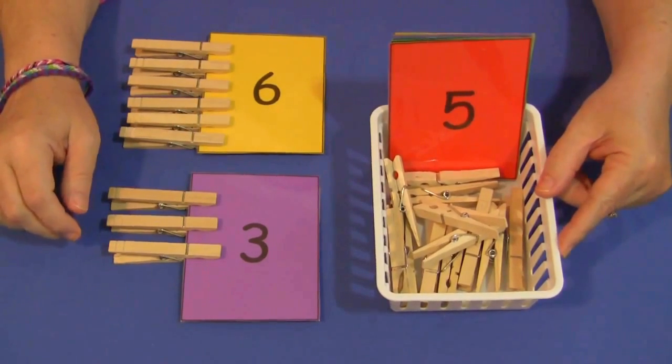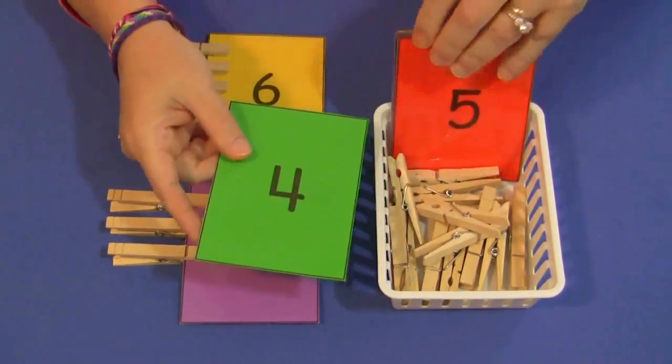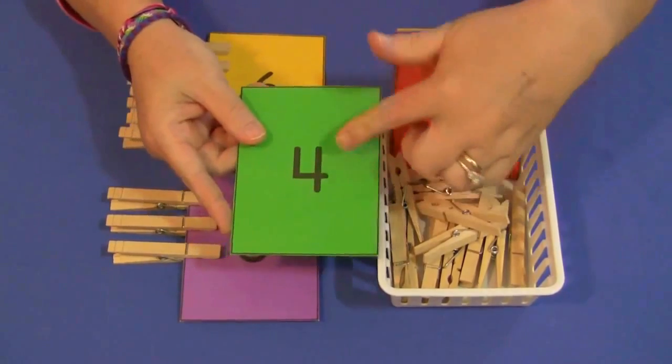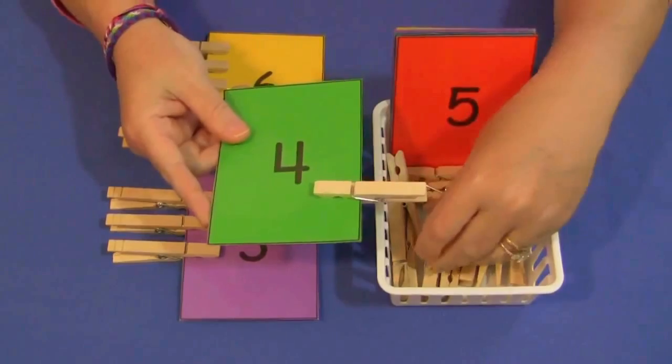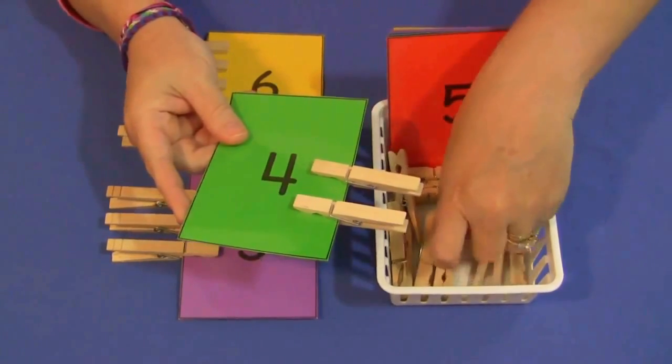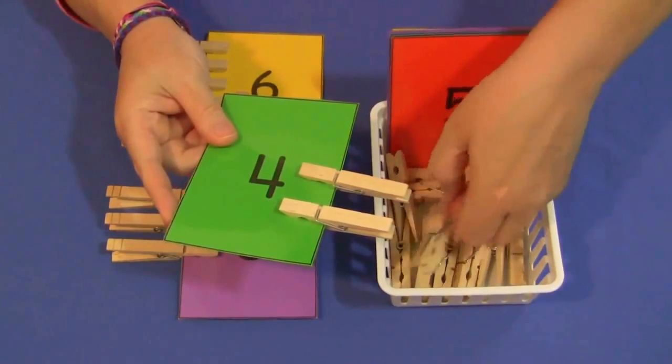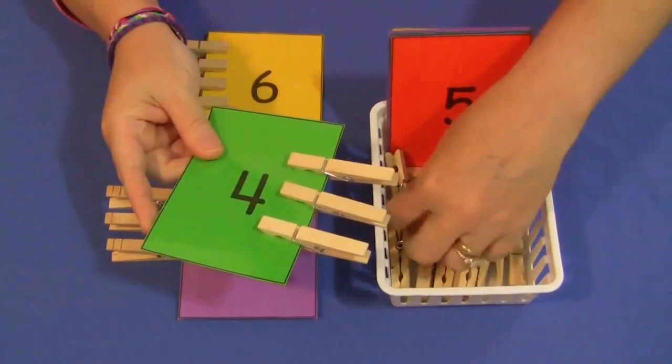And so what happens is the child will come and they sit down, they pick out a card and they put the same number of clothes pins on the card as the number that's on the card itself. This one has 4 and they would count 4 clothes pins and put them on the card and then they could draw another card and continue until all the cards have been done.